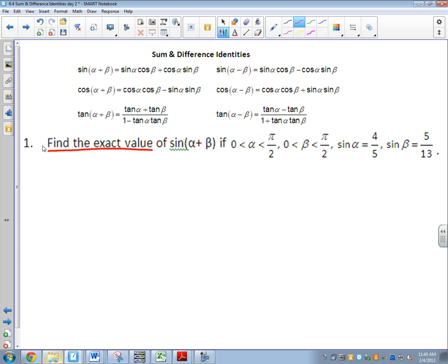So the question asks, find the exact value of sine of alpha plus beta. Hopefully by now you recognize sine of alpha plus beta is a sum and difference identity. I don't have to specifically tell you that it is. As soon as we see that, we know we're going to use this formula right here.